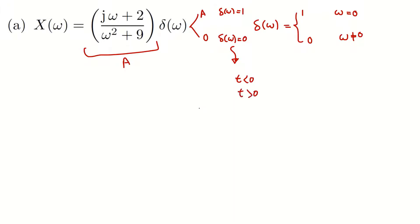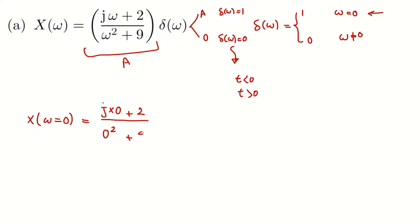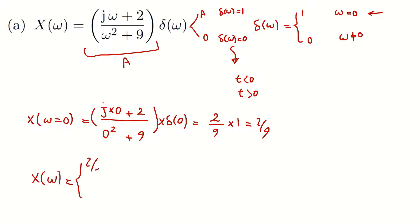So δ(ω) is zero for all t smaller than zero and t larger than zero, and it is one when ω equals zero. So I can simply say x(ω) equals 'a' when ω is zero. I should calculate x(ω) at ω equals zero: that's j times ω — which is zero — plus two, plus two times ω squared — which is zero squared — plus nine, times δ(ω) at zero which is one. So this equals two over nine times one, which is two over nine.